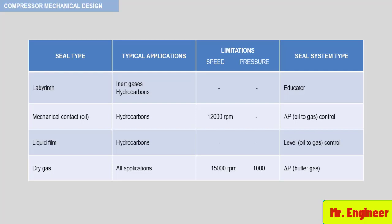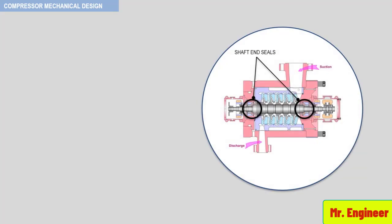With the exception of labyrinth seals used for inert gas services, all compressor seals are configured as double seals. The sealing fluid is supplied at a pressure greater than the process fluid and therefore requires a seal between the process and the sealing fluid, and between atmosphere and the sealing fluid. In the next couple of videos, we will examine in detail the major types of mechanical seals used for centrifugal compressors.